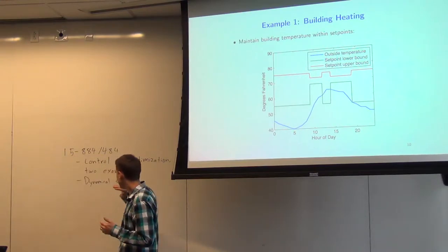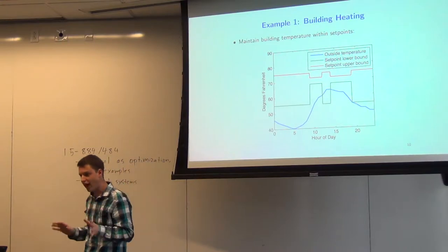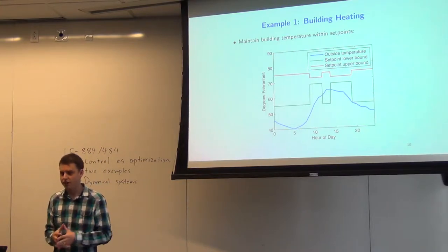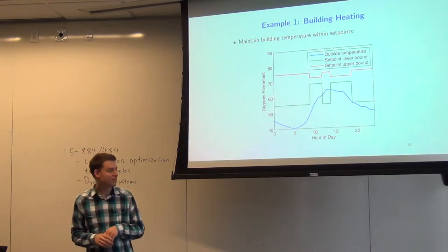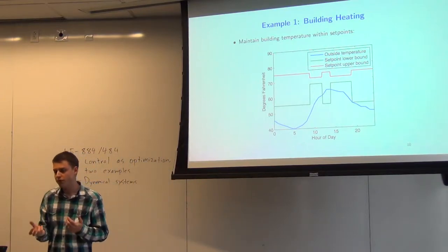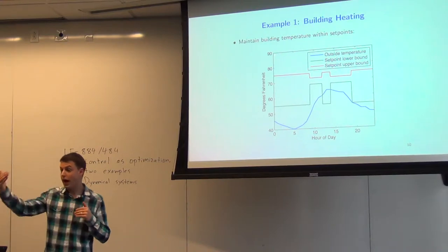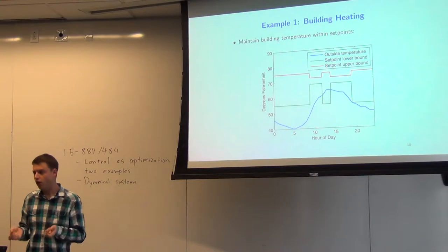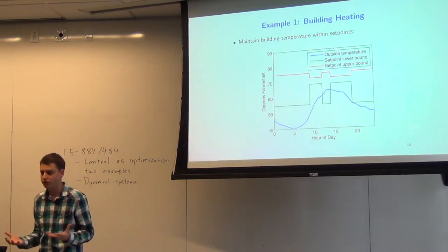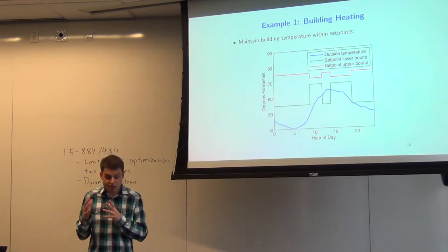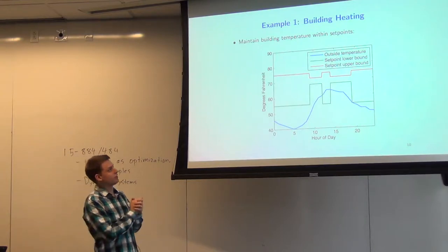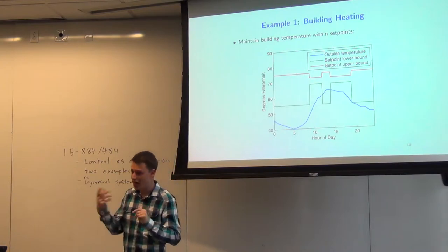I'm going to start today with two examples of simple control tasks. These are simple in some sense — both systems have one state and one control. But even here, treating it as controls optimization, especially if you have predictions about the future, can already induce very complex-seeming behaviors that look very intelligent. Even with a very simple control framework, we can get very exotic control for different domains.